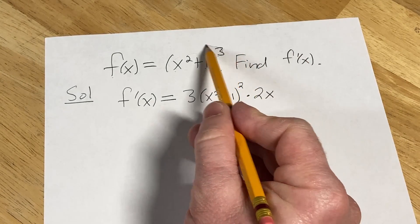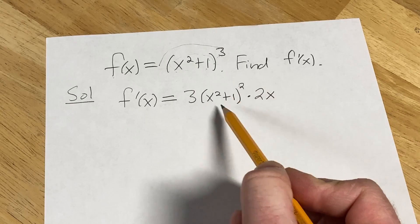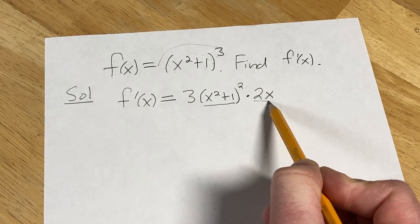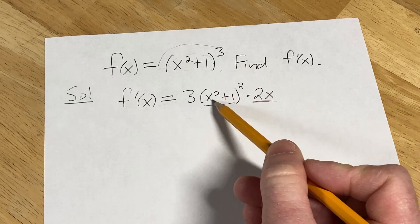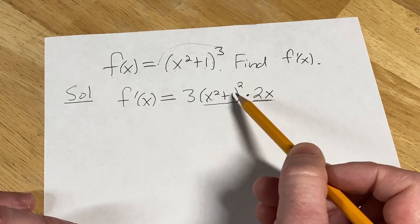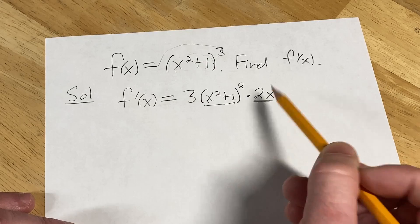Again, you bring down the 3, subtract 1 from the exponent, leave the inside untouched, times the derivative of the inside function. The inside function is x² + 1; the derivative of x² is 2x and the derivative of 1 is 0, so we get 2x.